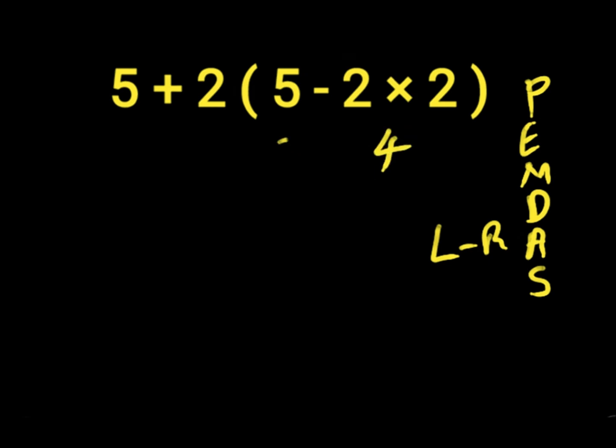Now we have 5 minus 4 in the parenthesis. 5 minus 4 gives us 1. So the expression becomes 5 plus 2 times 1.